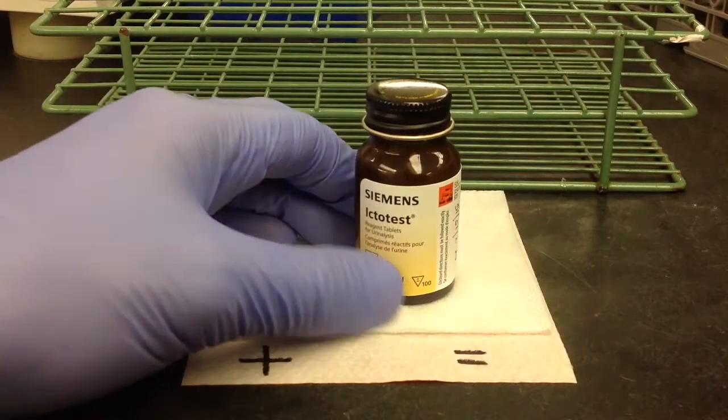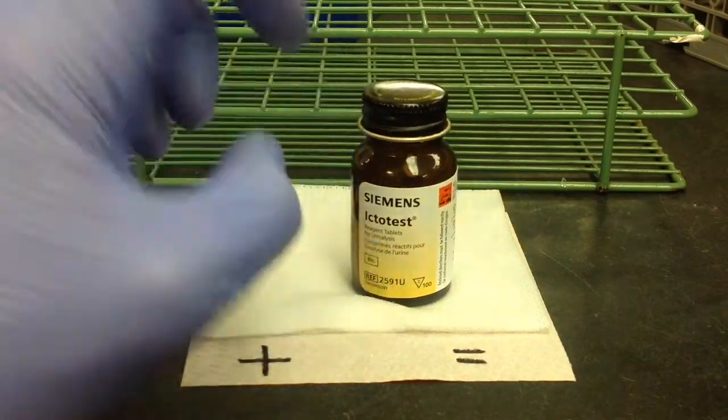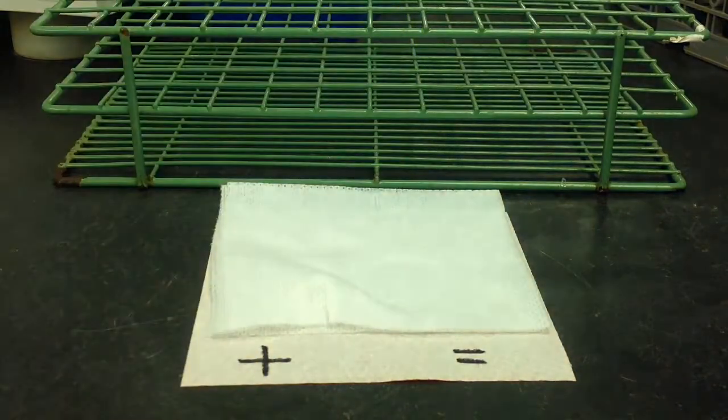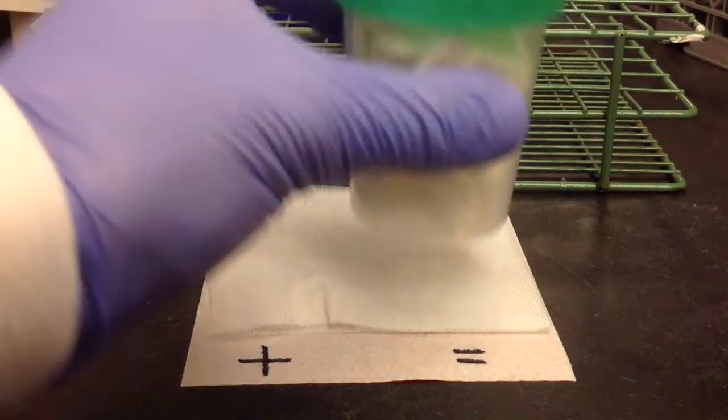In this video, I'm going to show you how to perform the Ictotest on urine, and this is typically used as a bilirubin confirmation test.